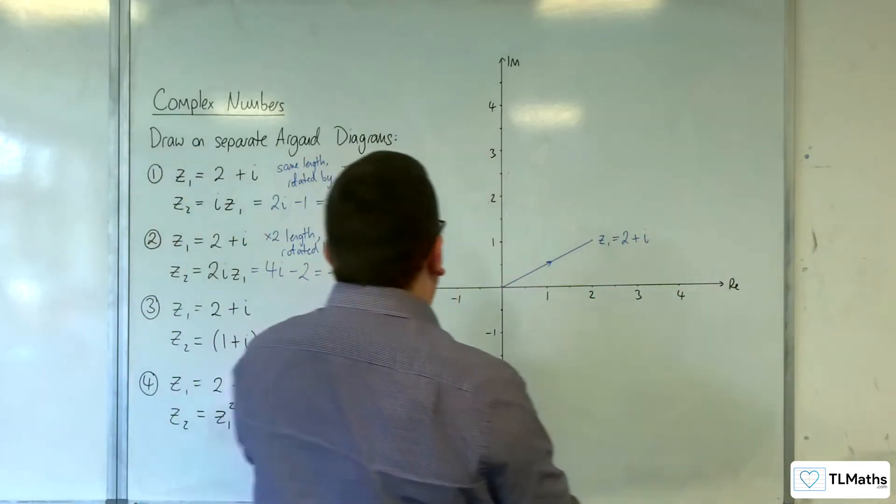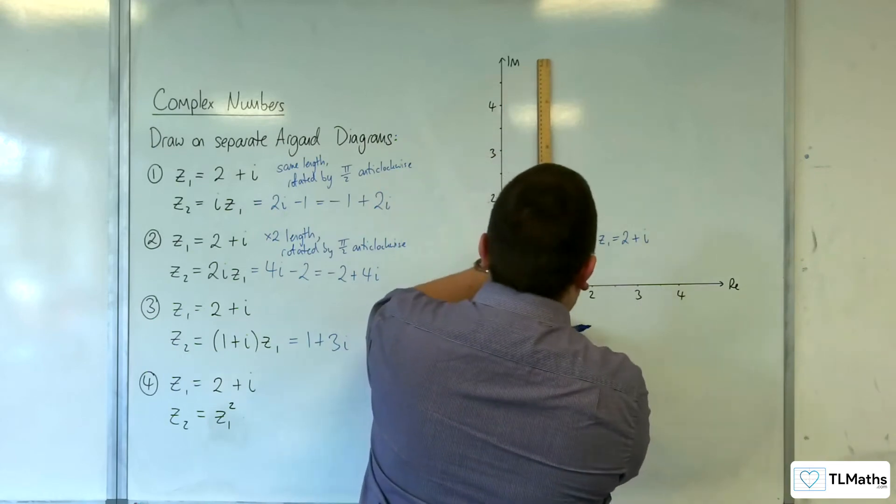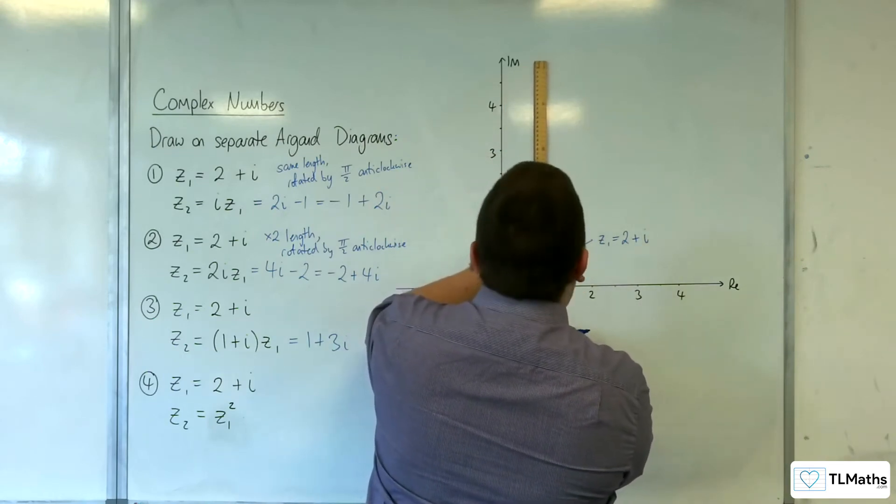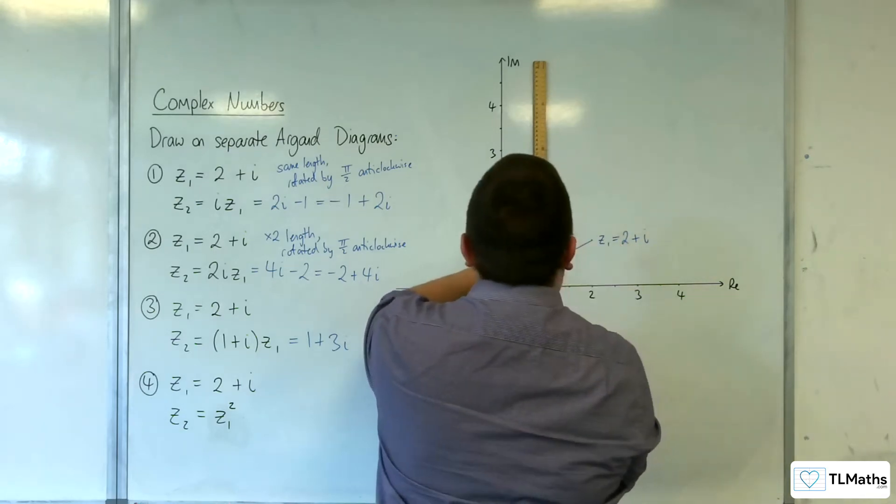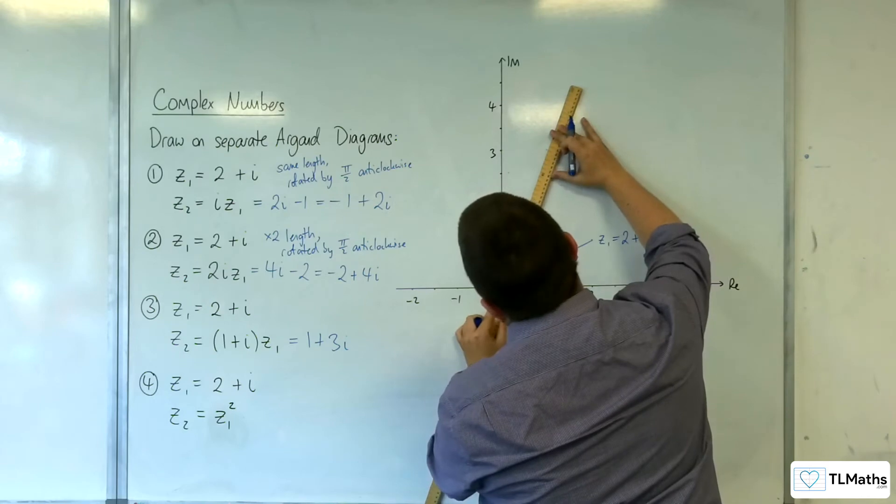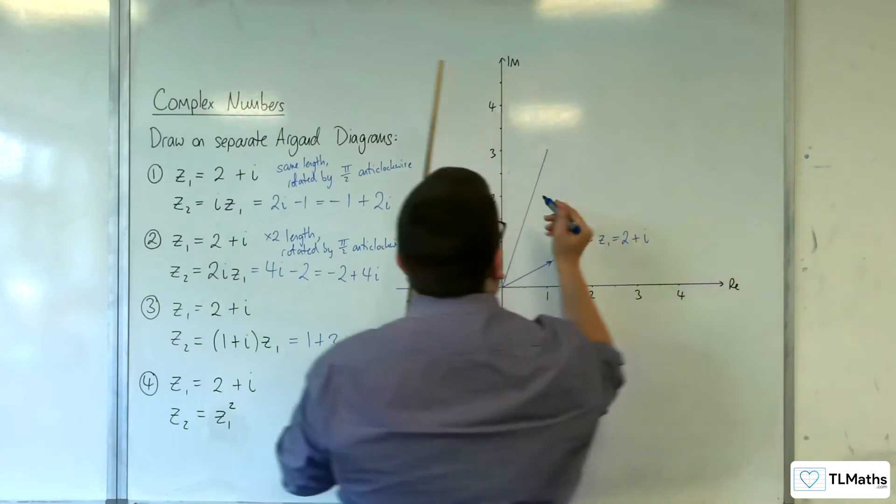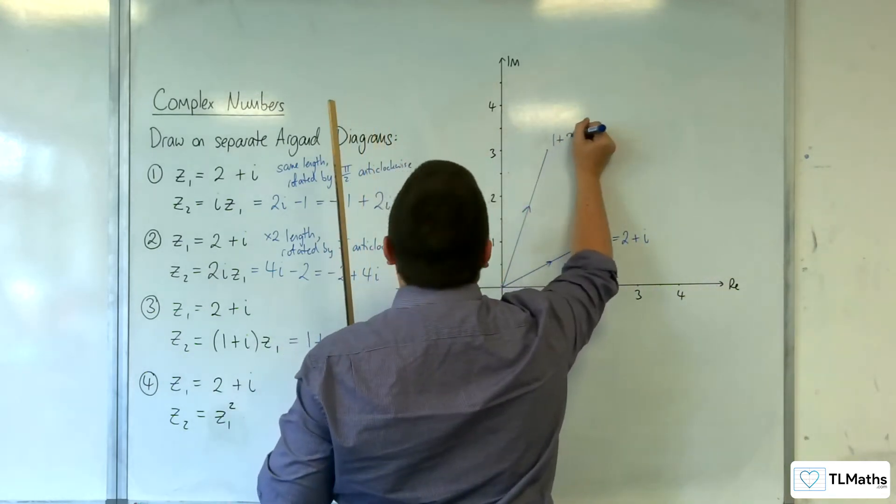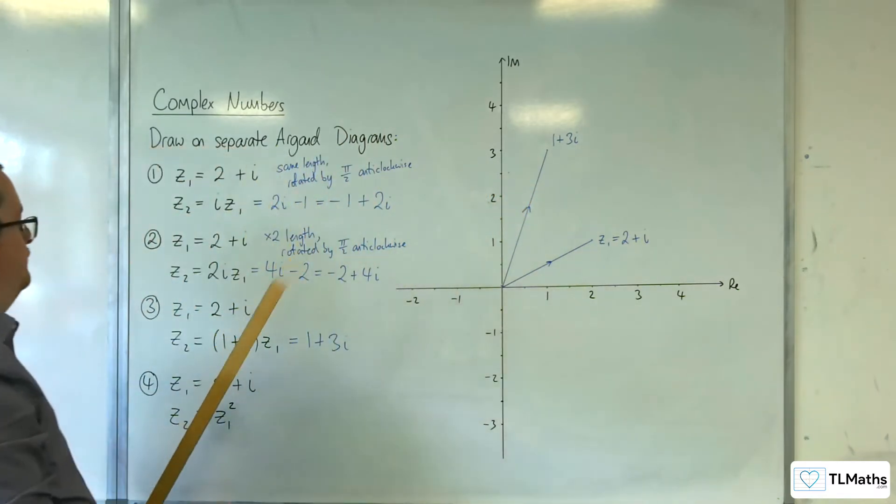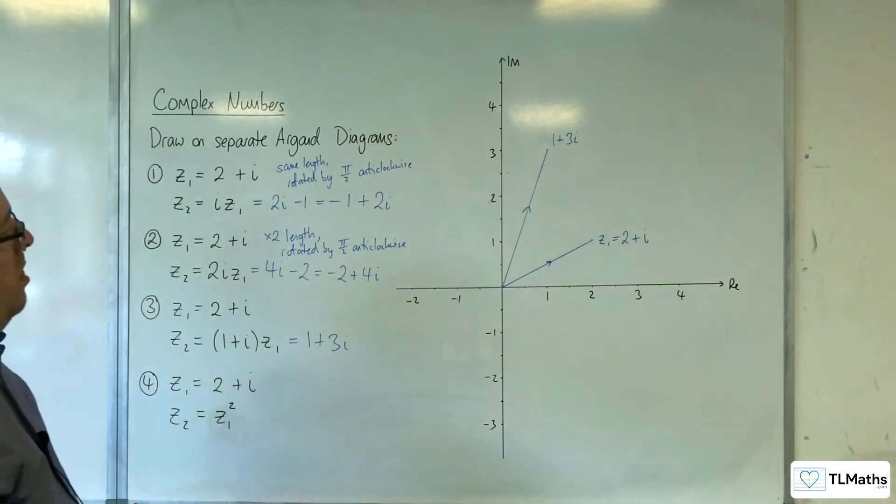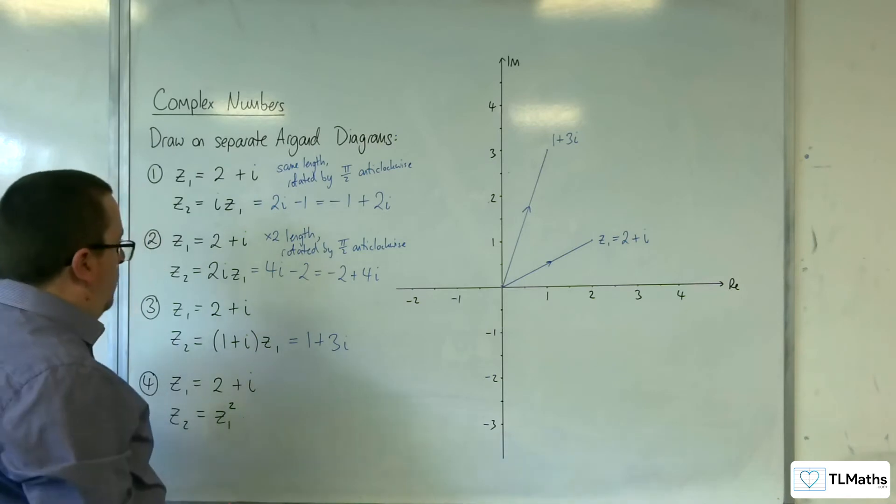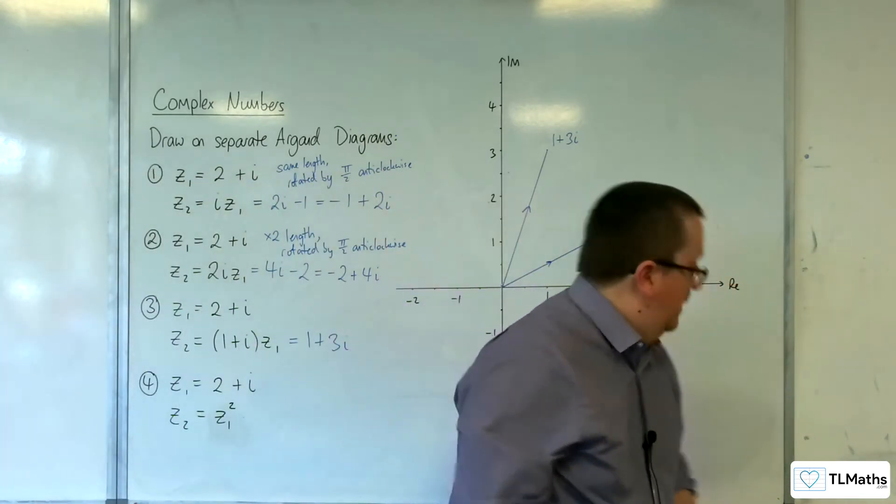1 plus 3i, it's about there. That's our z₂. We've definitely increased in length. It might be useful to actually know what the modulus was, and now is.